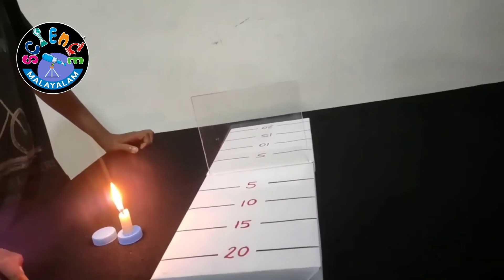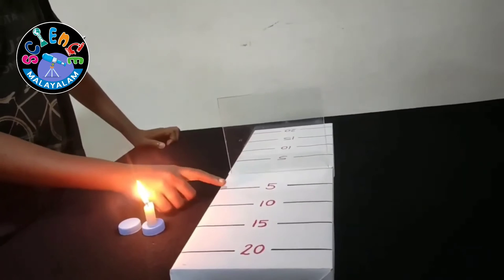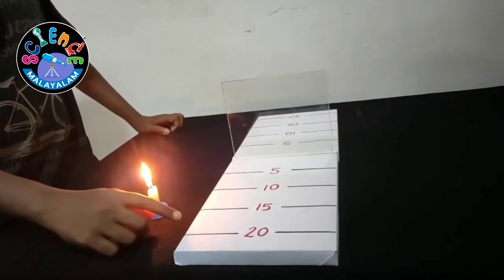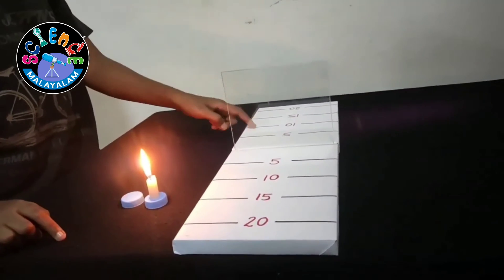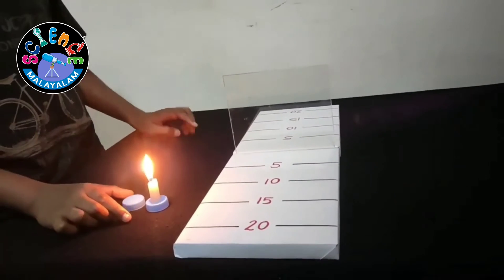Zero is at the center and we have marked 5 cm, 10 cm, 50, 20 on both sides. We have placed the glass at the middle.